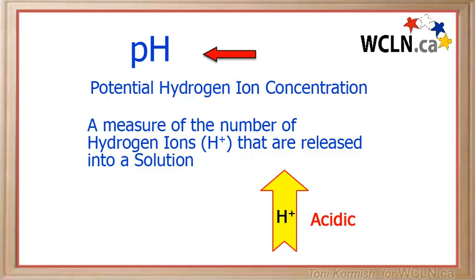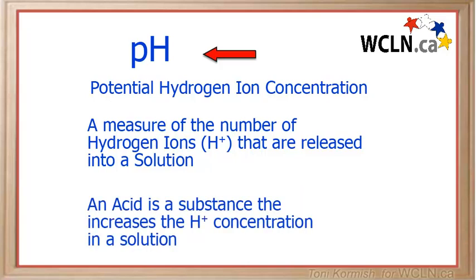The symbol for the hydrogen ion is a capital H with a positive charge as a superscript to it. An acid is a substance that increases the hydrogen ion concentration in a solution. So the more acid added to a solution, the more hydrogen ions added to that solution, and the more acidic it becomes.